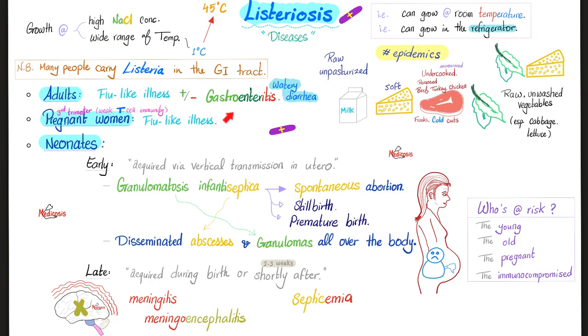So in adults: flu-like illness, plus or minus gastroenteritis in the form of watery diarrhea, vomiting, nausea, etc.